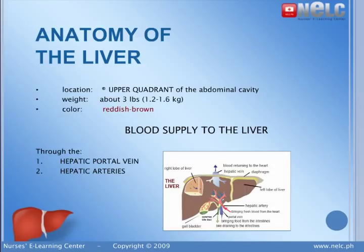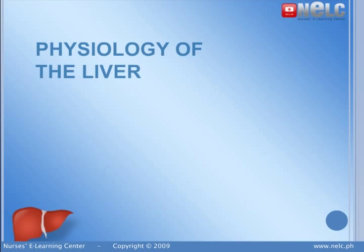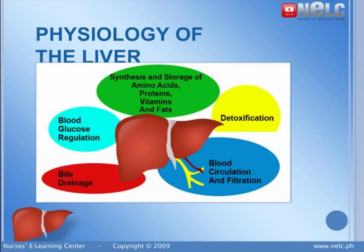The liver is a very diverse organ, having six different physiological functions. These are metabolism, storage, excretory, synthesis, detoxification, and immunity. It metabolizes lipids, carbohydrates, and proteins, and it can convert some amino acids into others.